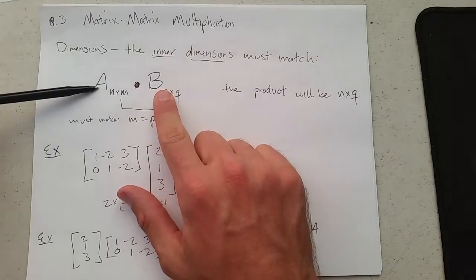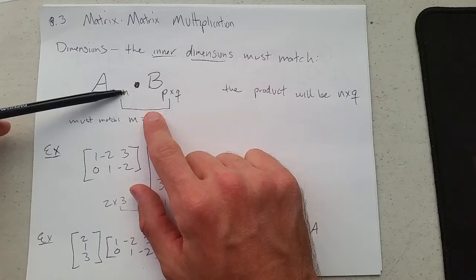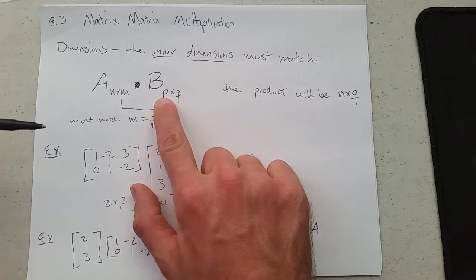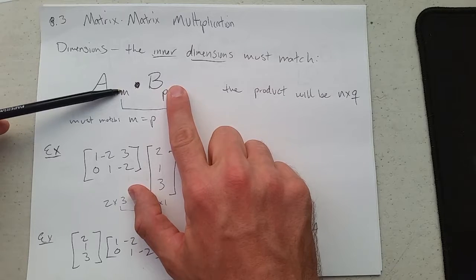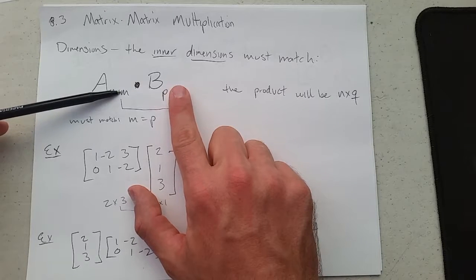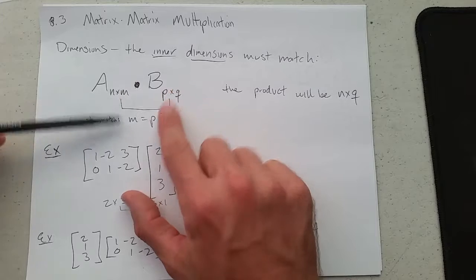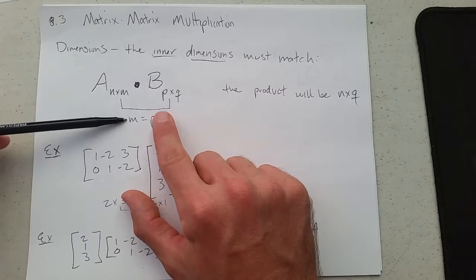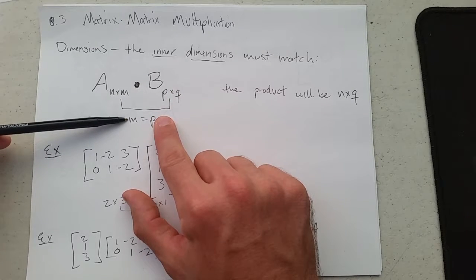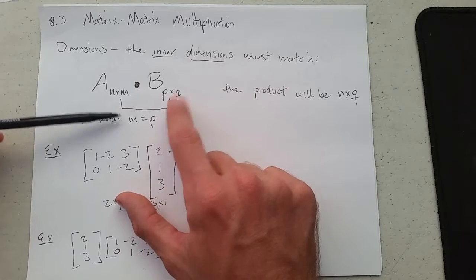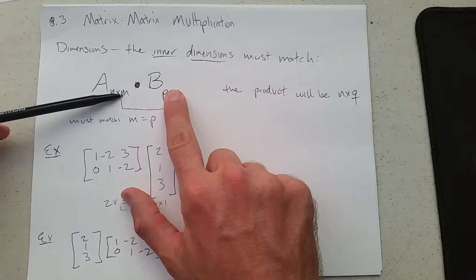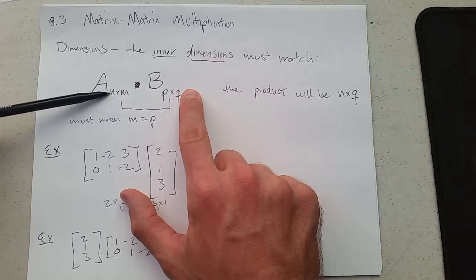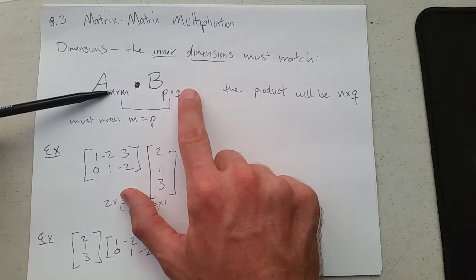If you have two matrices, your first one is n by m, and your second one is p by q, your columns have to match your rows. The easy way to think about this is the inner dimensions must match. So m must equal p. When they match, the product will have dimensions n by q. The inner dimensions match, so your final dimensions on your product are going to be n by q.